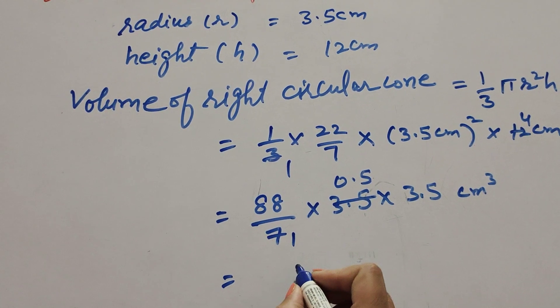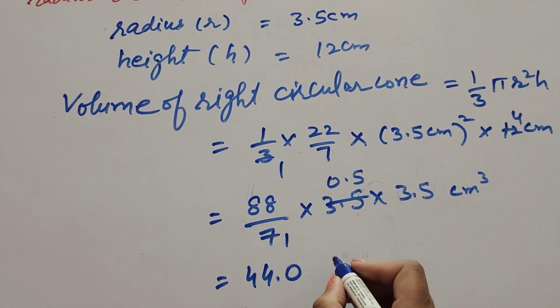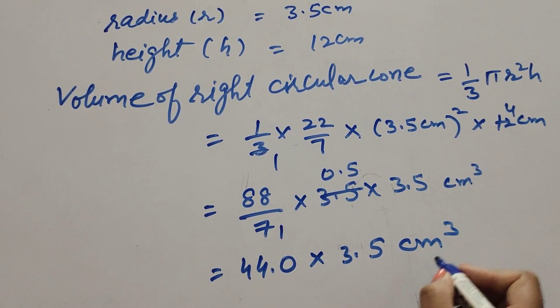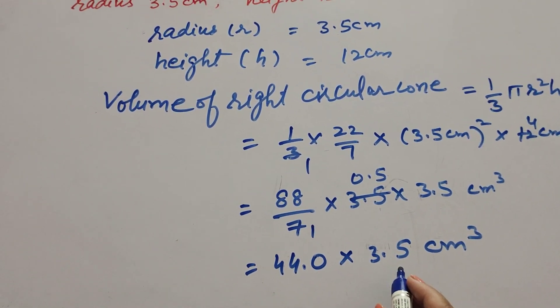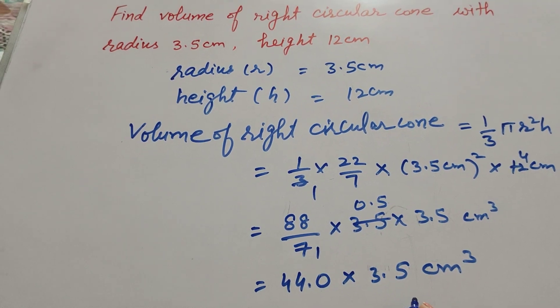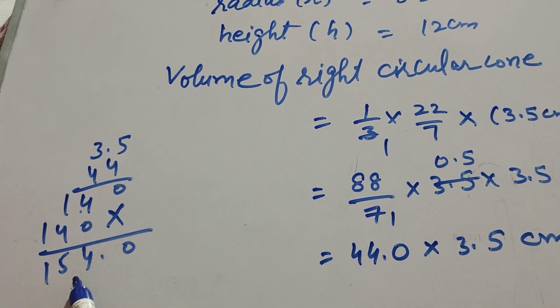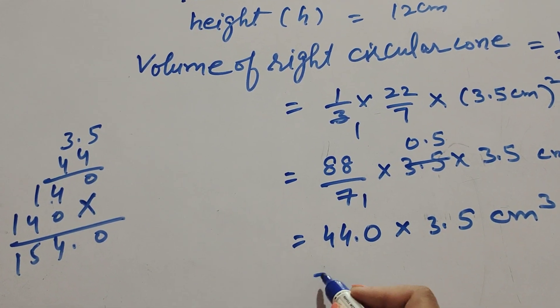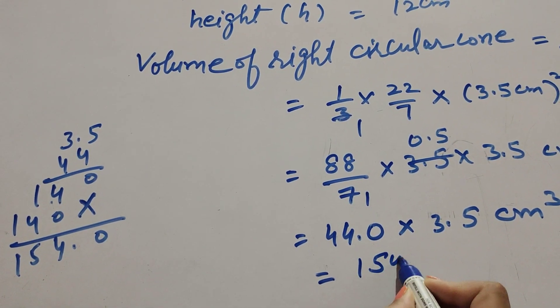Volume of right circular cone is 154 cm cubed.